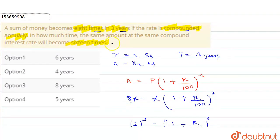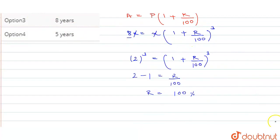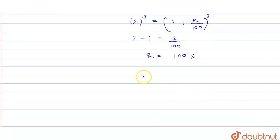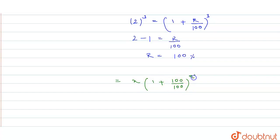Now for the second case, the amount becomes 16 times. The principal is the same x, and the amount is 16x. So we have 16x = x × (1 + 100/100) to the power n. The x cancels with x, and 100/100 cancels, giving us (1 + 1) to the power n, which equals 2 to the power n. So 16 = 2 to the power n.